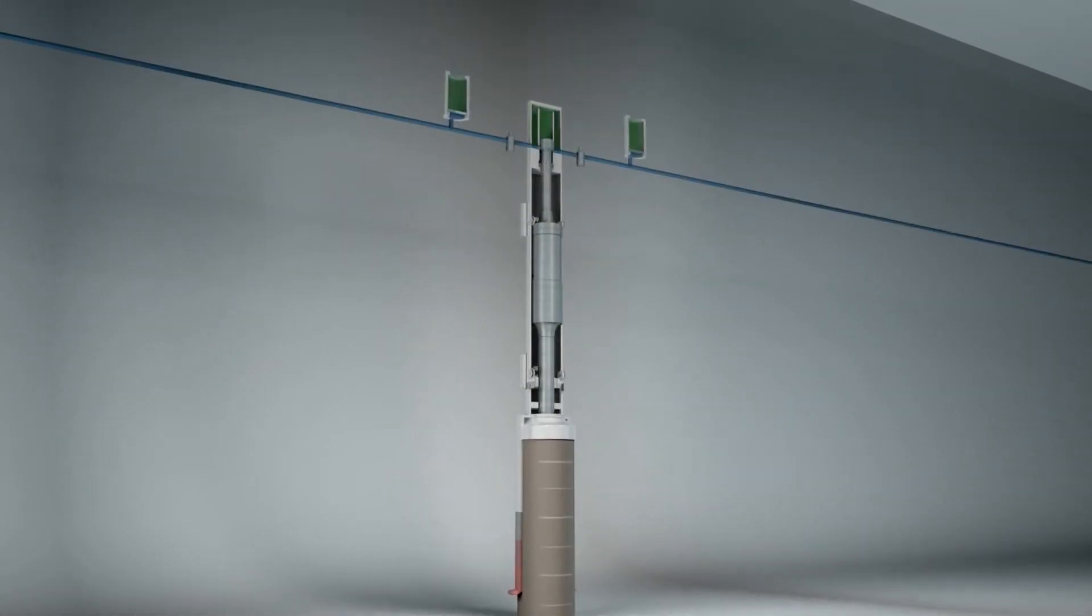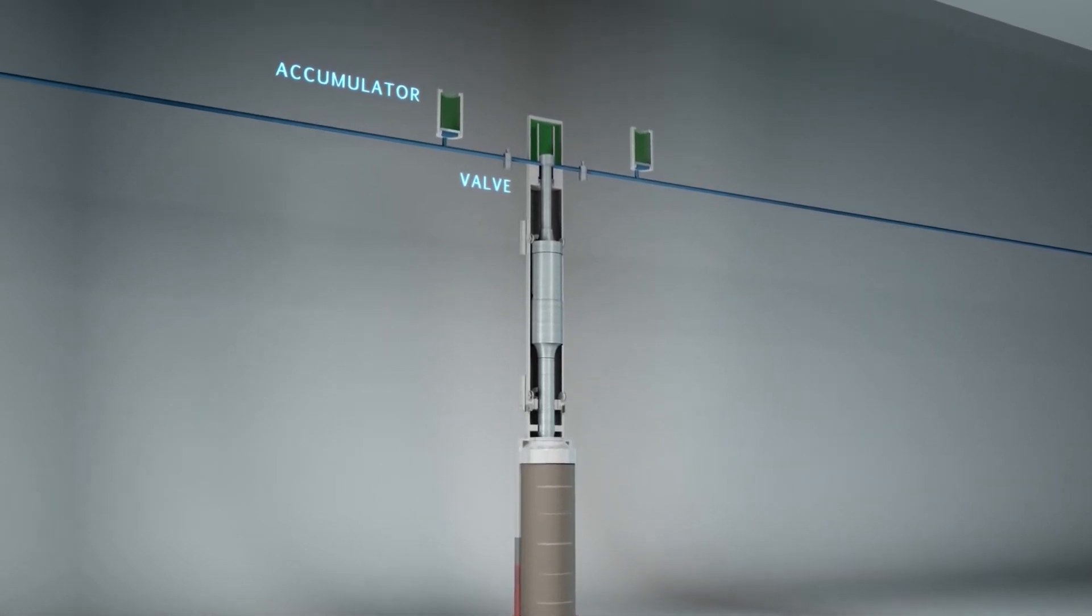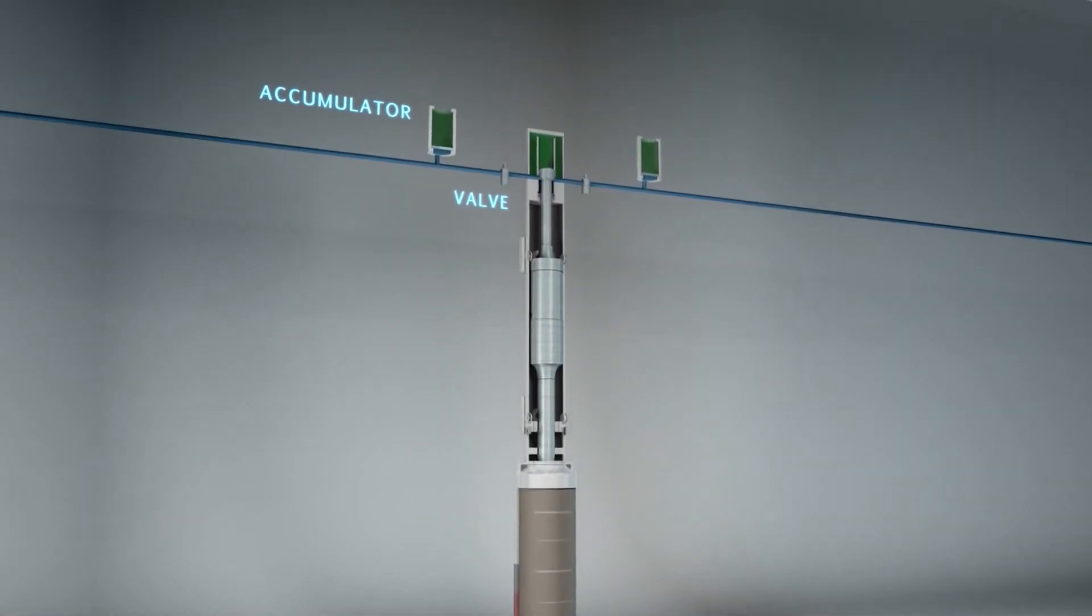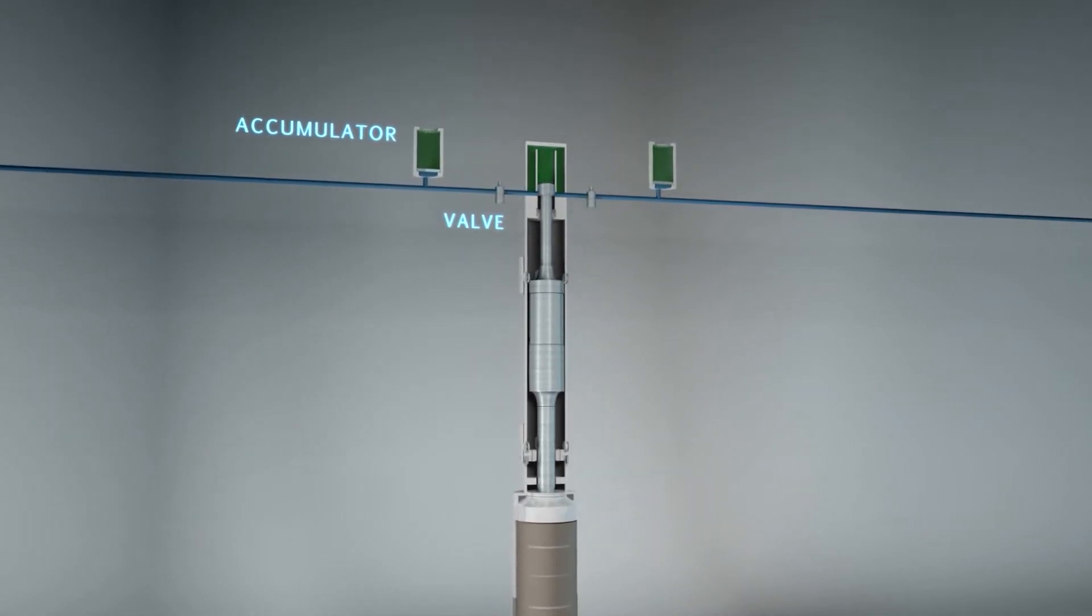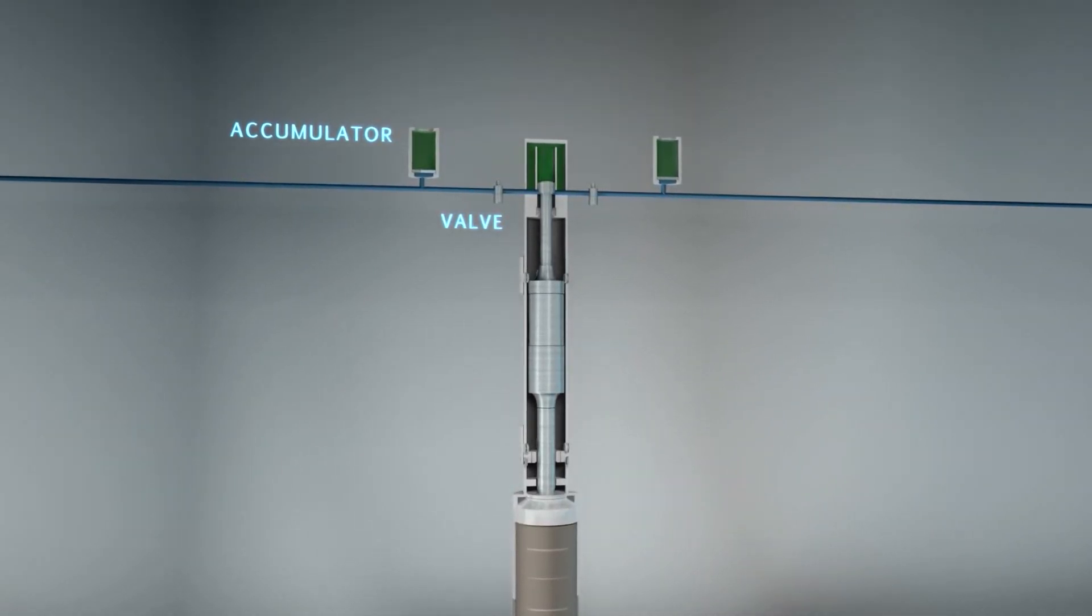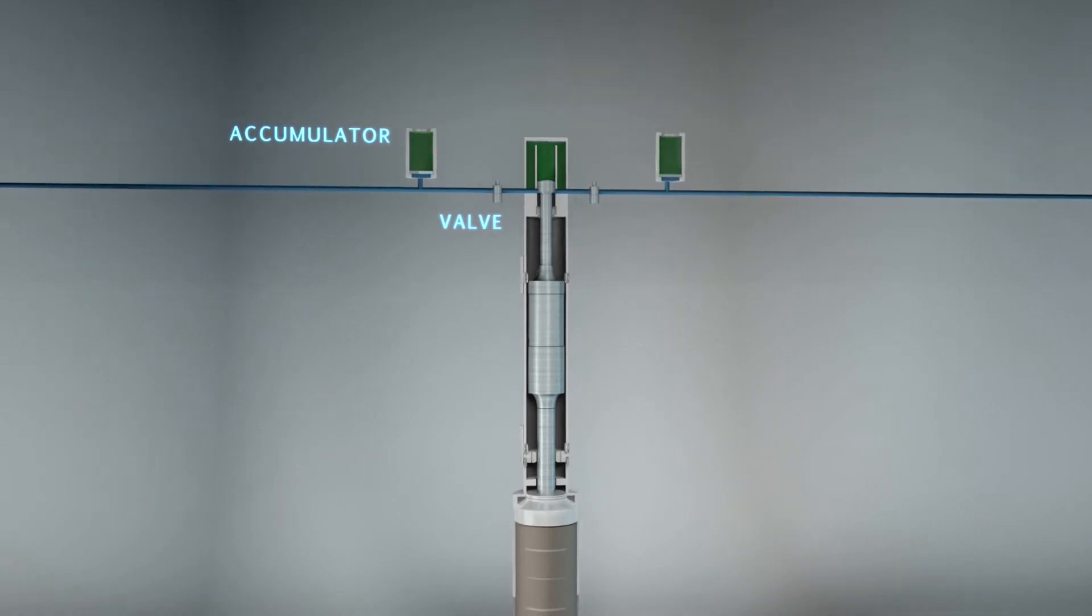Oil flows from the power pack through the supply valve to a cylinder chamber and returns through the return valve. At rest, both valves remain open and oil circulates.